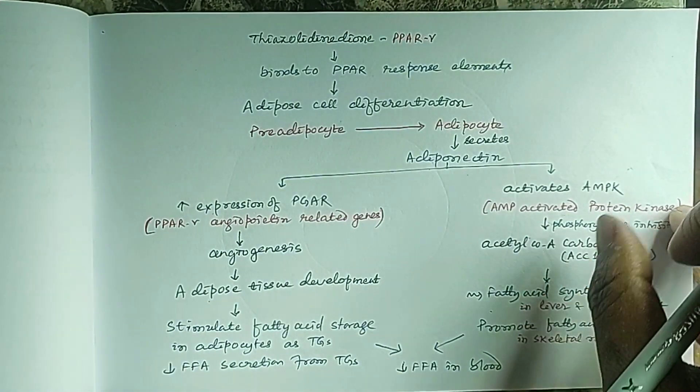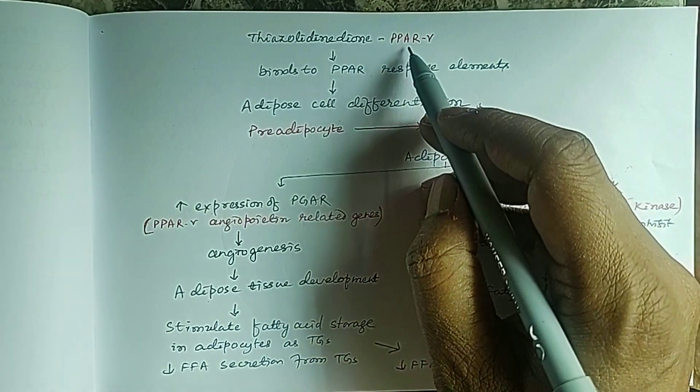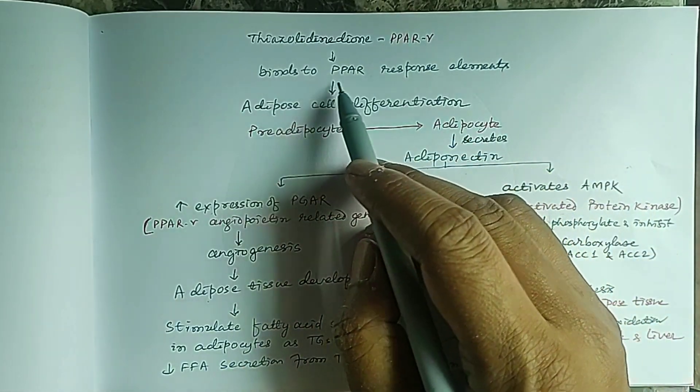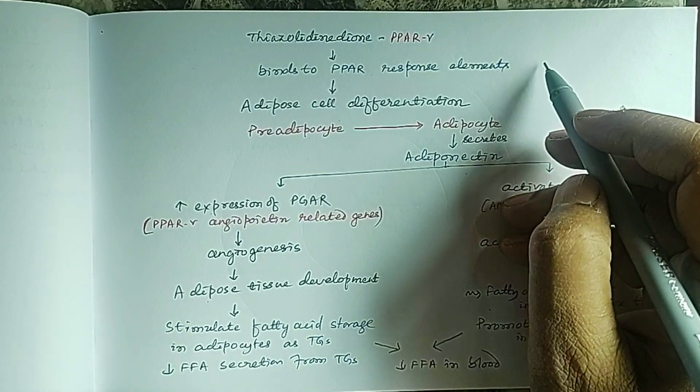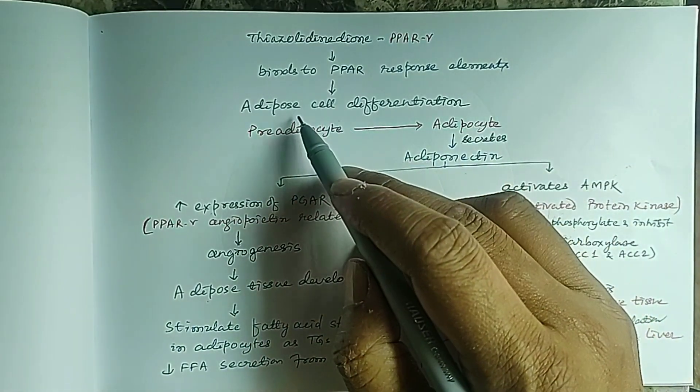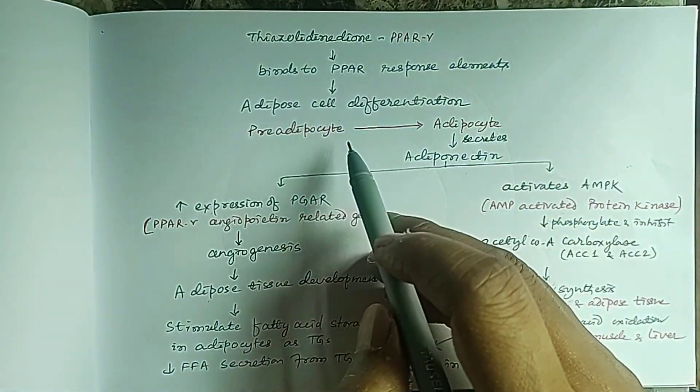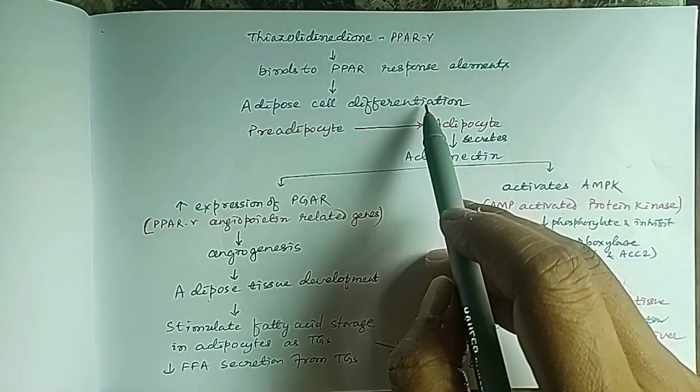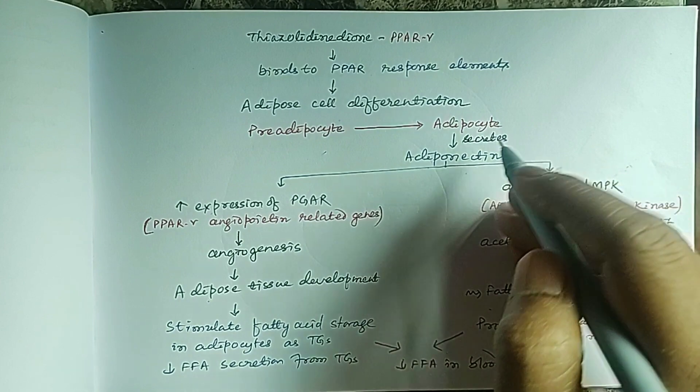Thiazolidinediones act as agonists on PPAR gamma, and that complex will bind to the PPAR response elements in the DNA. This causes adipose cell differentiation, meaning pre-adipocytes will be converted to adipocytes, and these adipocytes will secrete adiponectin.